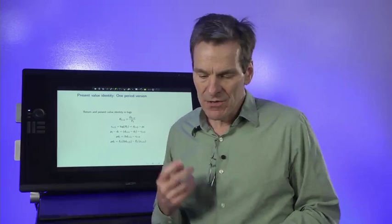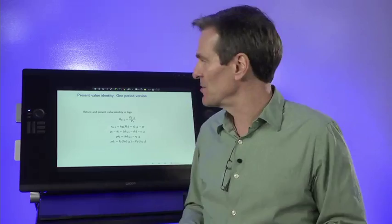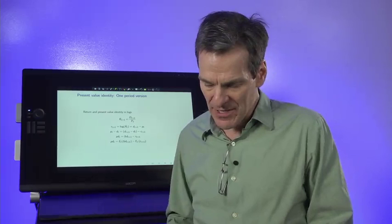We're going to use two interesting new tools: the linearized present value identity and the vector autoregression. That's going to be the key to putting those facts together and understanding how they relate to each other. Now I'm going to do the present value identity first in a one period case. The logic then is completely clear and then we'll move on to the multi-period case which fits our data.